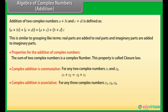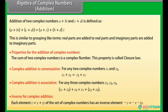Complex addition is associative. For any three complex numbers Z1, Z2, Z3: (Z1 plus Z2) plus Z3 is equal to Z1 plus (Z2 plus Z3). Inverse for complex addition: each element Z equal to X plus iota Y of the set of complex numbers has an inverse element, minus Z, equal to minus X minus iota Y.